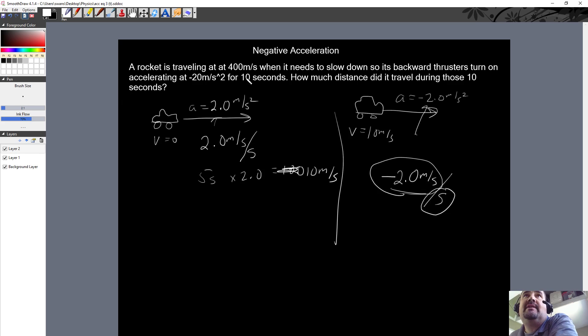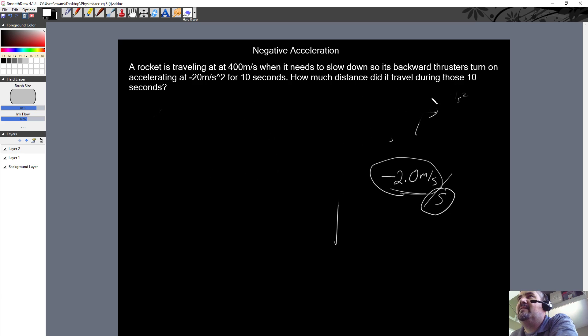No need to worry about it. Let's pull out the eraser and erase this. I like using the eraser more than the clear screen; it makes me feel like I'm on a chalkboard. Let's get the pencil out and solve this problem. A rocket is traveling at 400 meters per second when it needs to slow down.